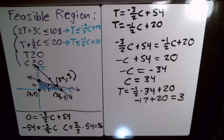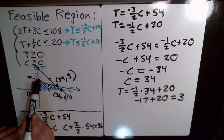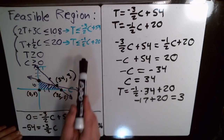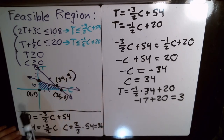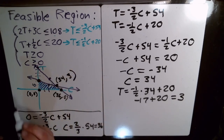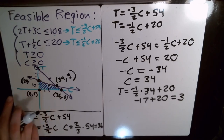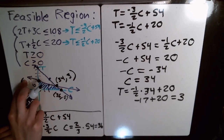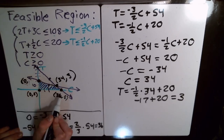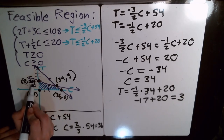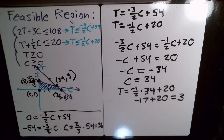The last vertex is the T-intercept of the finishing line, which was up at 20. So C = 0 and T = 20, giving the point (0, 20). We now have all four vertices of the feasible region.